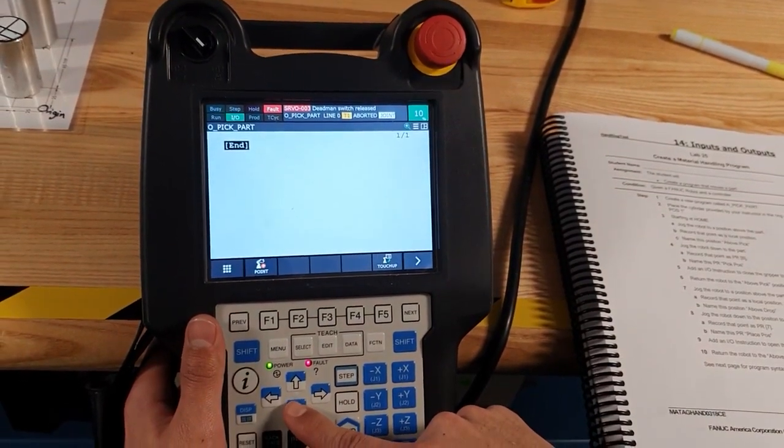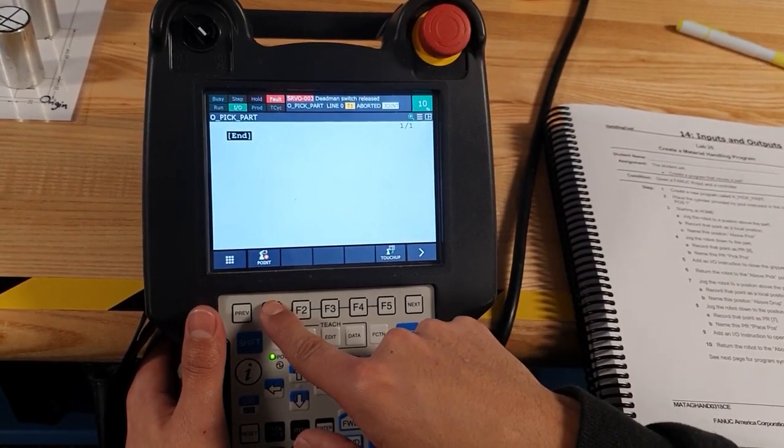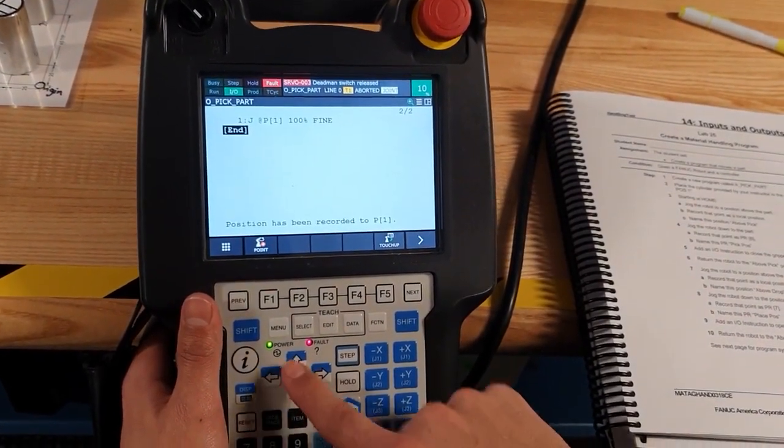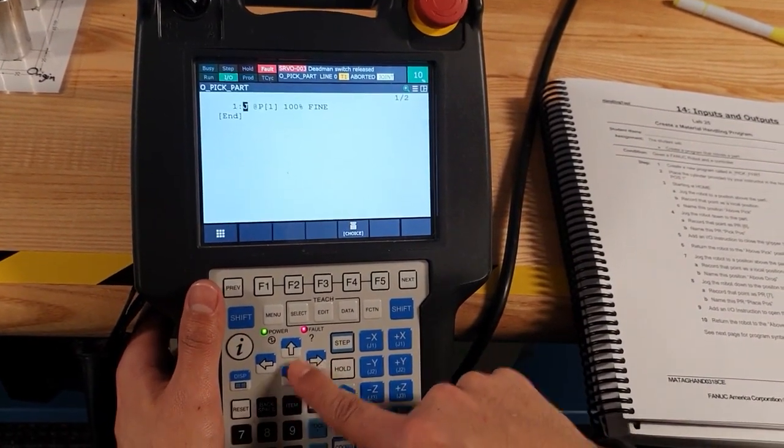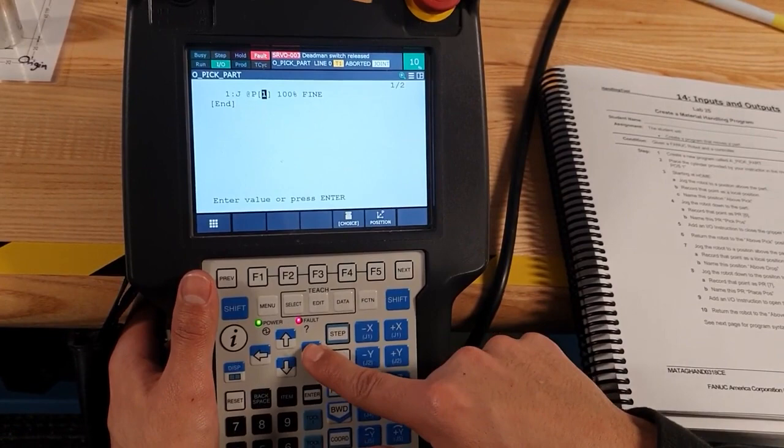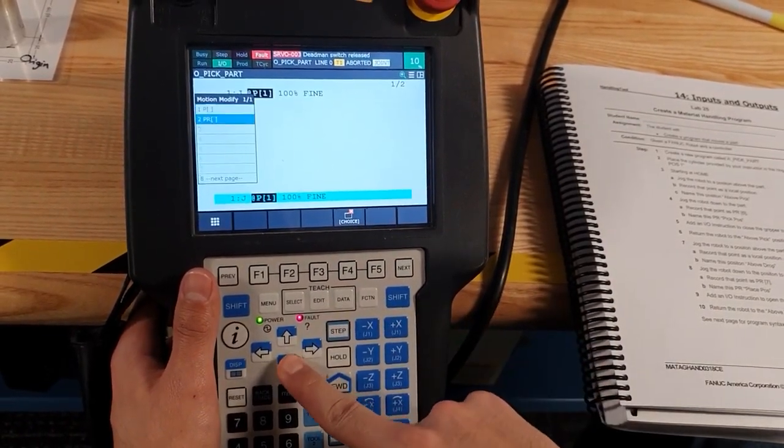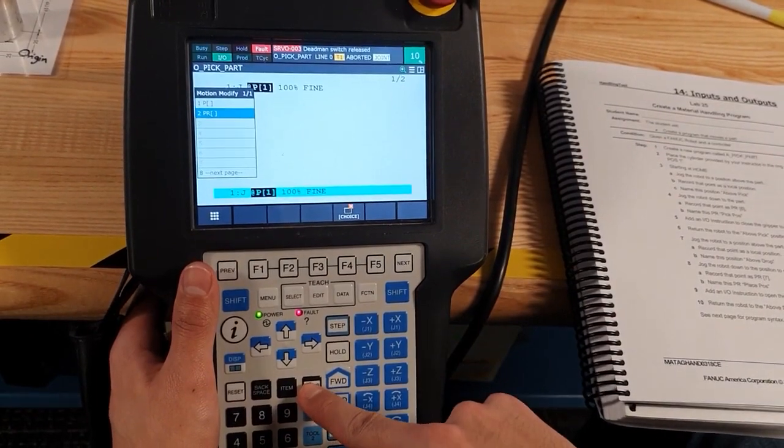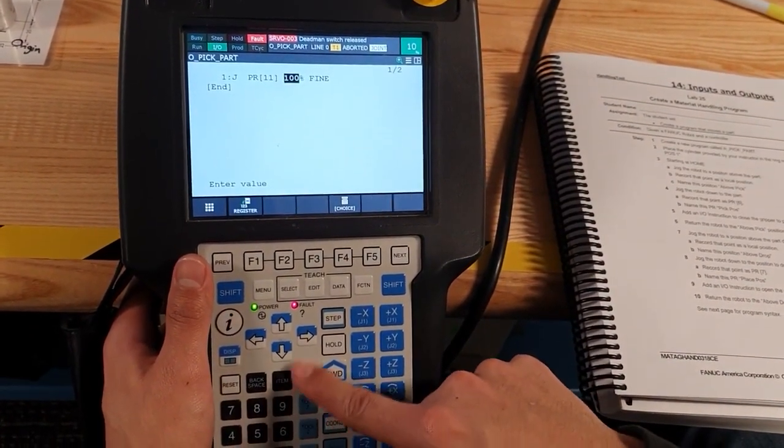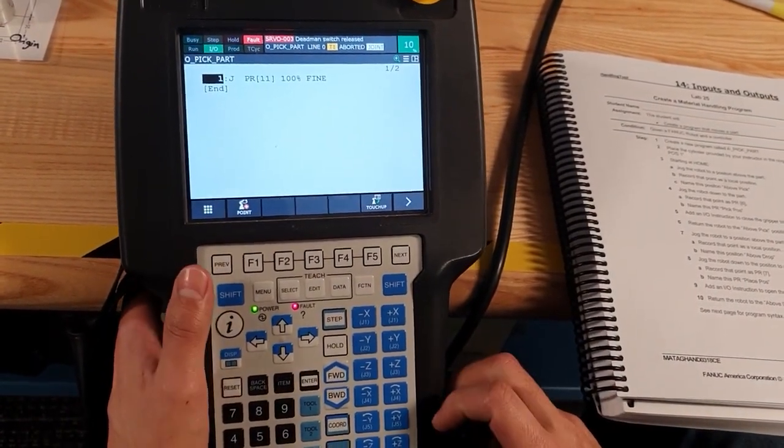And now we're going to start to home. We're going to press joint and we're going to use find. Now we have a home, then we're going to select PR. Our home is at 11.